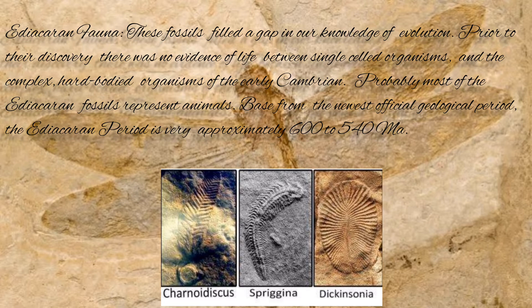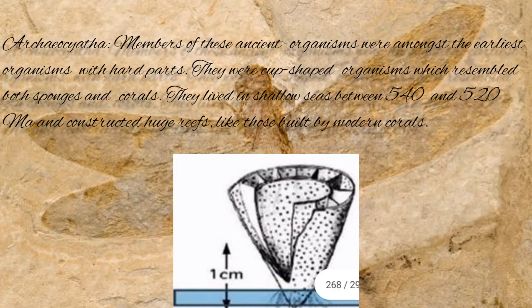Most of the Ediacaran fossils represent animals. Based on the U.S. official geological record, the Ediacaran period is very approximately 600 to 540 million years ago. Archaeocyatha — members of these ancient organisms were among the earliest organisms with hard parts. They were cup-shaped organisms that resembled sponges and corals, and lived in the shallow seas between 540 and 520 million years ago, constructing huge reef structures like those built by modern corals.